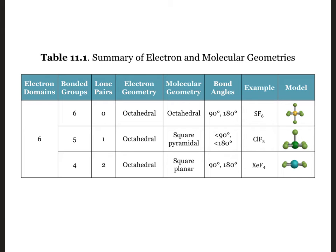An example of an octahedral electronic and molecular geometry is the sulfur hexafluoride molecule, SF6, shown here. We can also get two more structures by replacing bonding groups with lone pairs of electrons. Let's look at some examples.